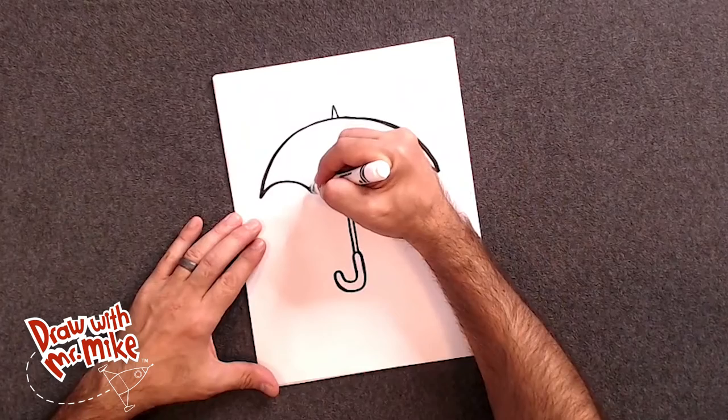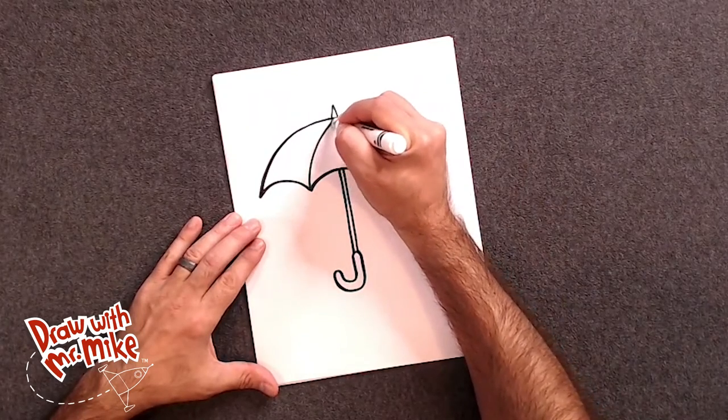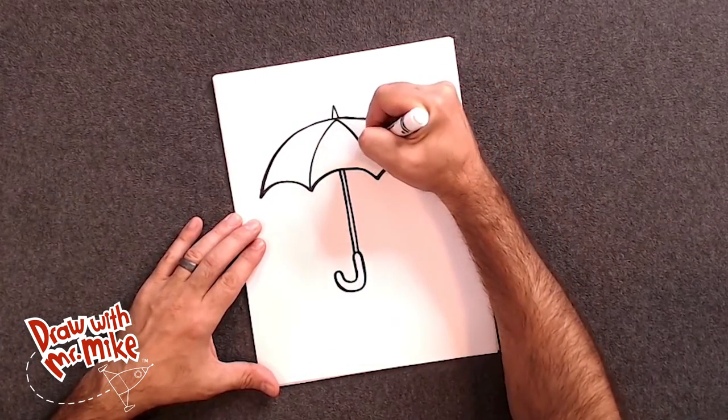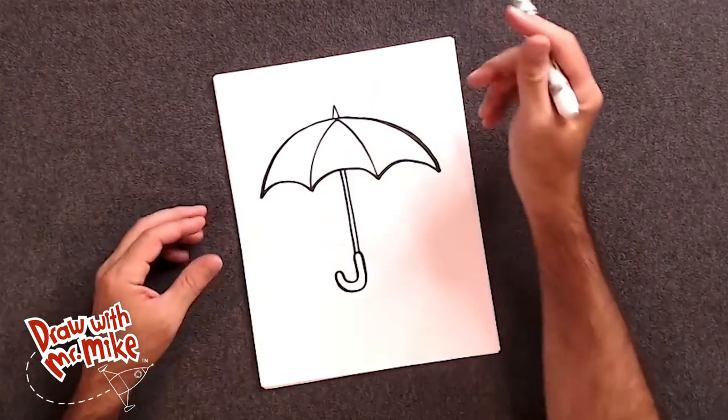Next, we have just two more arcs here. One. And then two. And now we get to create the rain.